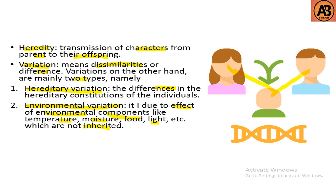So heredity means transmission of characters, and variation means dissimilarities. Variation has two types: hereditary variation, which involves differences in hereditary constitution, and environmental variation due to factors like temperature, moisture, food, and light, which are not inherited. This covers the fundamental concepts of genetics. That's all for today and we'll learn more in the next video. Thanks for watching.